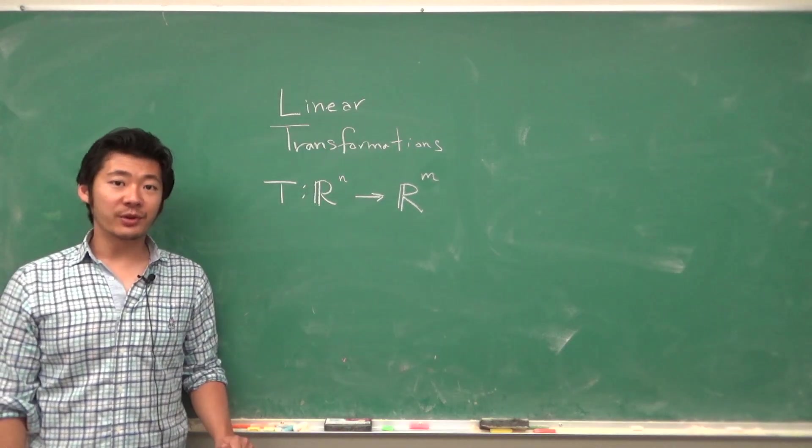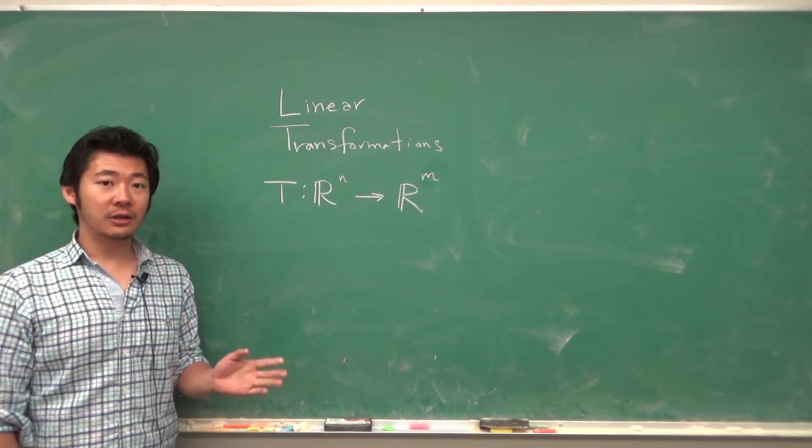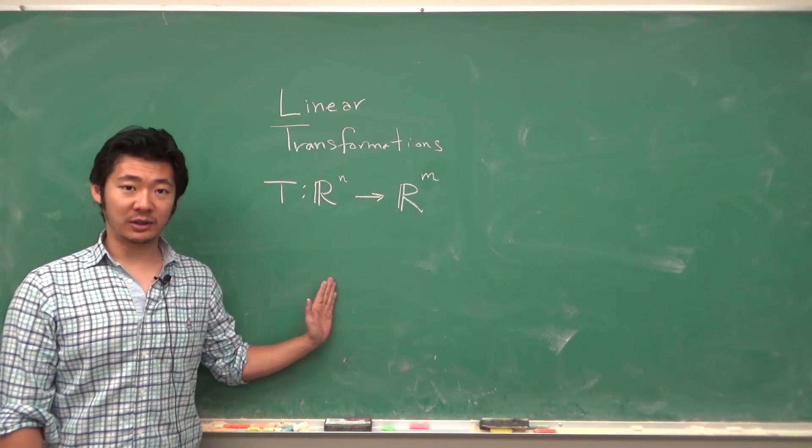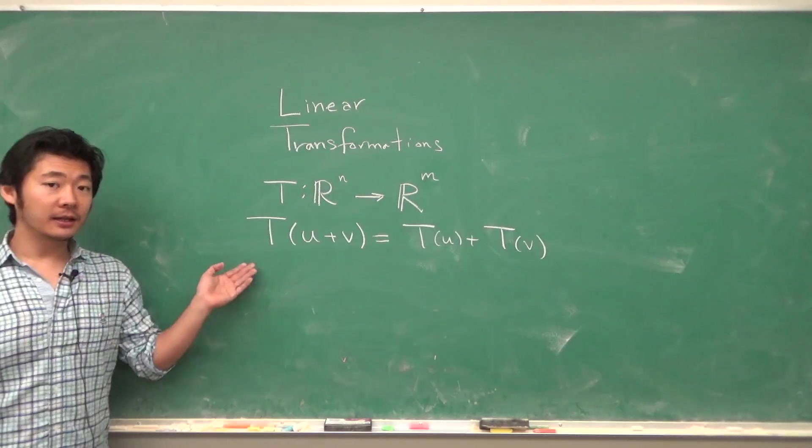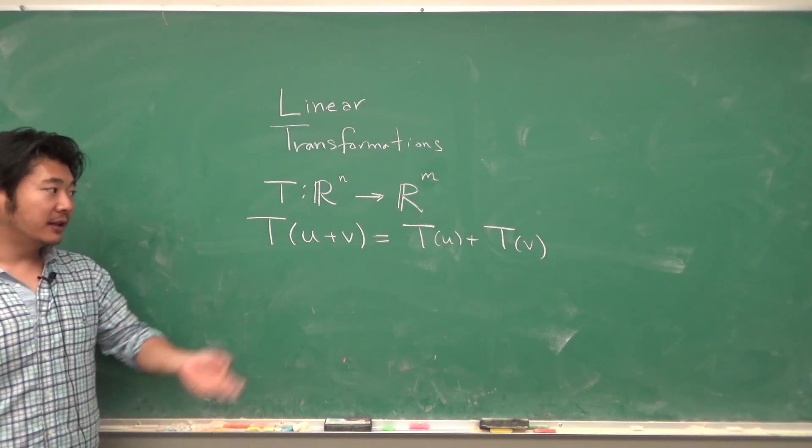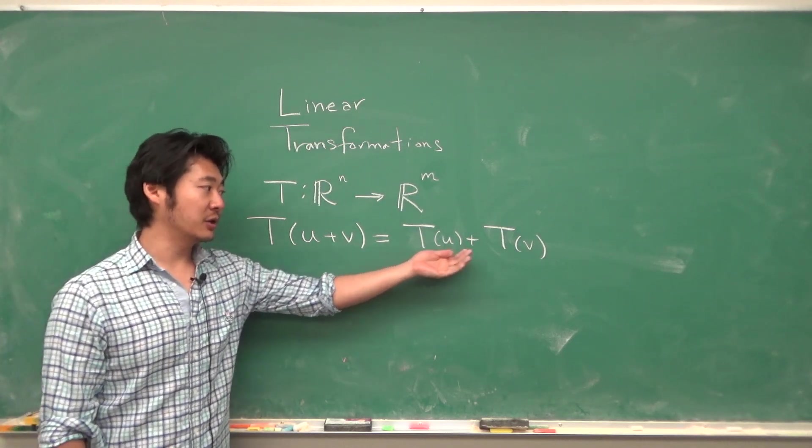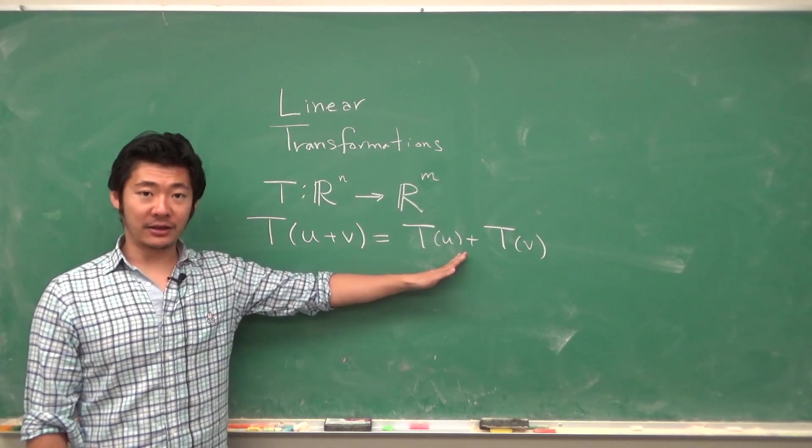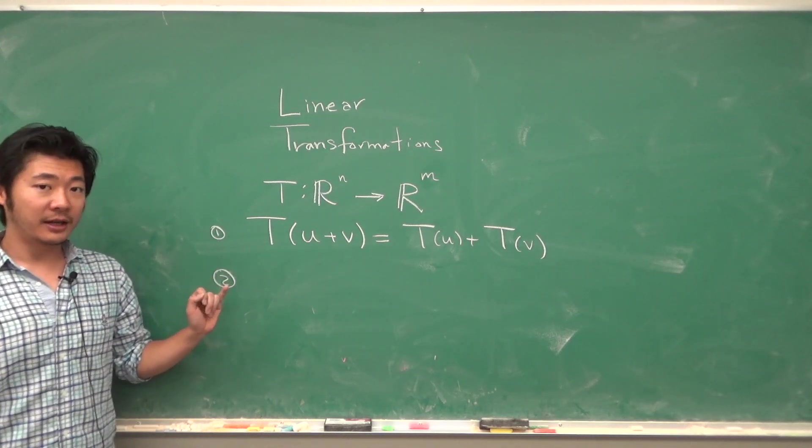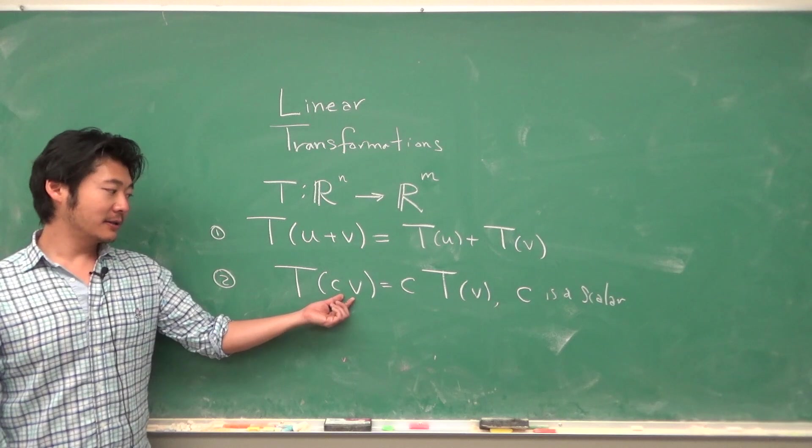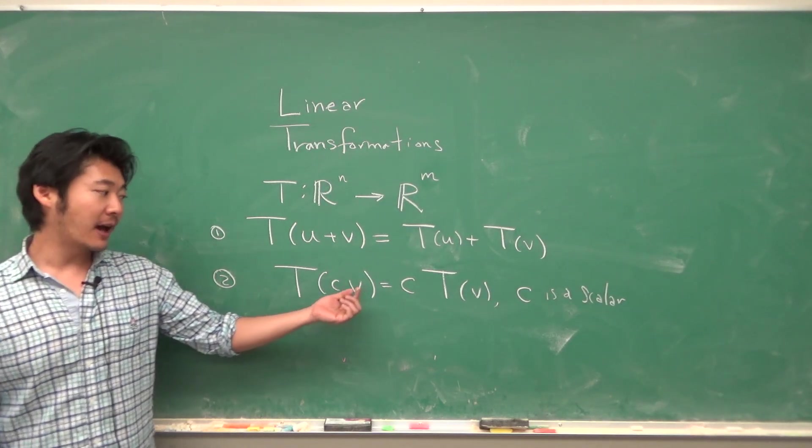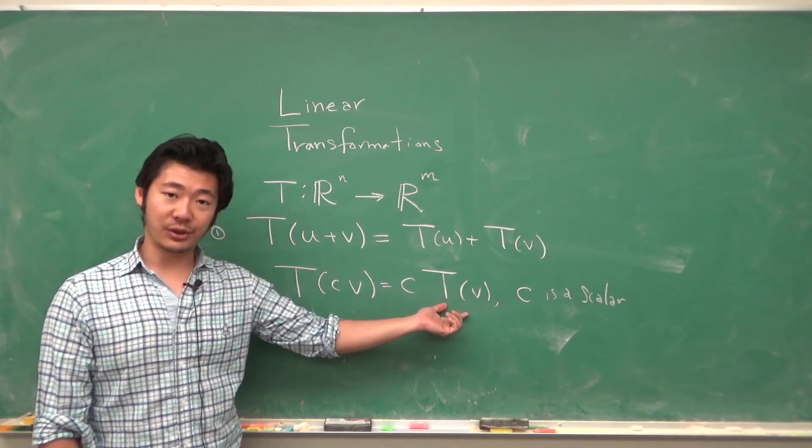In linear algebra, we want to restrict our attention to studying linear transformations. So linear transformations are special types of transformations. The definition is: if we apply the transformation to a sum of the vectors, then it is the same as applying each transformation to the vectors, then taking their sum. And another requirement for a transformation to be linear is that if we scale the vector before the transformation, then it's the same as scaling the vector after the transformation.